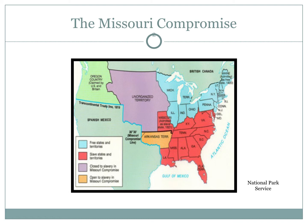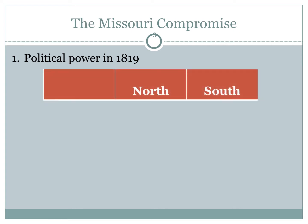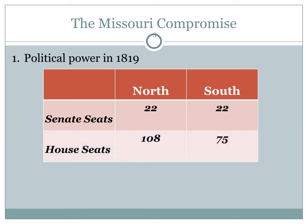We're going to start with the Missouri Compromise. Setting the stage and looking at political power in 1819, comparing the North versus the South: in the Senate in 1819, each section of the country was represented equally. There were 11 Northern states and 11 Southern states, so each had 22 senators. The North was more populous, so they had more seats in the House — 108 members from the North and 75 from the South.